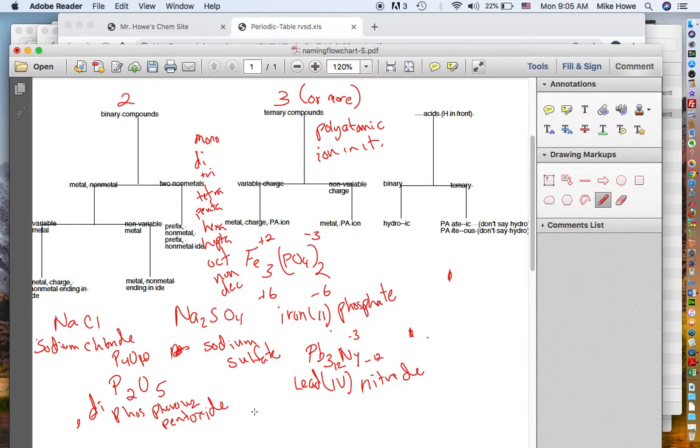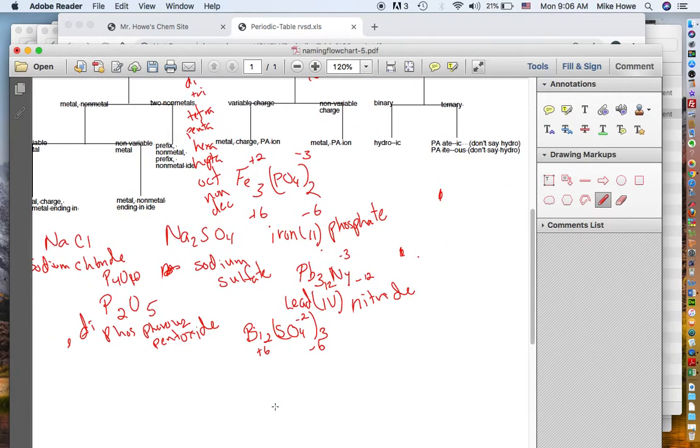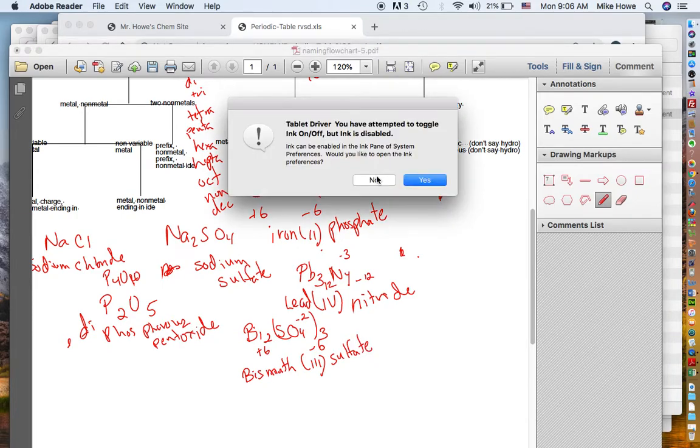Let's do another one. Say we had Bi2(SO4)3. We know sulfate's negative two. Negative two times three is negative six. And we know the bismuth has to be positive six. So there's two bismuths, so each one's positive three. So this would be called bismuth three sulfate, because SO4's name is sulfate based on your periodic table.